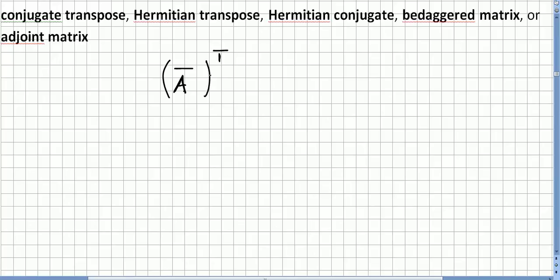This matrix is also called the Hermit matrix or Hermitian, Hermitian conjugate. There are lots of words for this. Conjugate transpose, Hermitian transpose or only Hermitian, Hermitian conjugate, bedaggered matrix, I will explain later why.